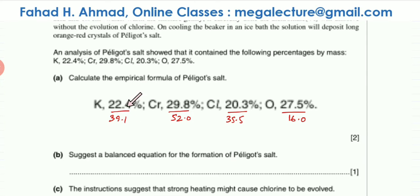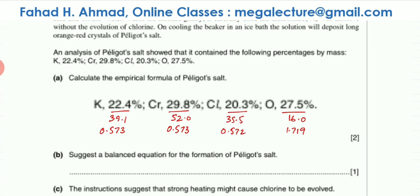The ARs are: potassium 39.1, chromium 52, chlorine 35.5, and oxygen 16. I've divided each percentage by its respective AR. This gives you the relative moles — mass divided by the AR gives moles of all the atoms. The answers from my calculator are: 0.573, 0.573, 0.572, and 1.719.